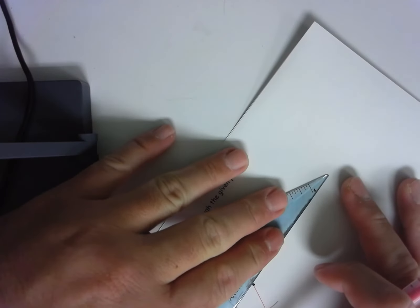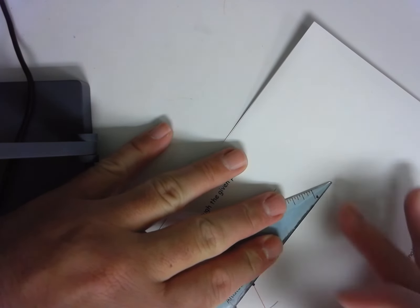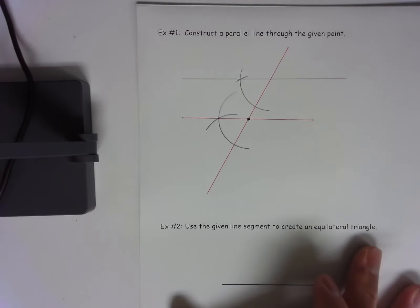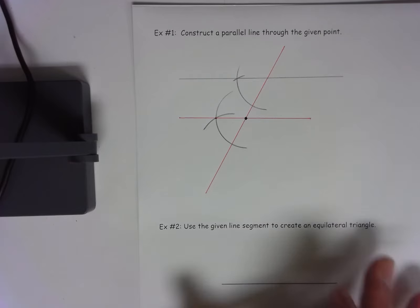Now we'll draw them in using my straight edge. I've now created a pair of parallel lines through a point.